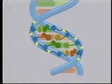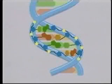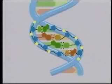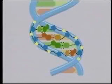Pairs of bases form the rungs of the DNA ladder. Hydrogen bonds hold the base pairs together. There are four different bases in DNA.